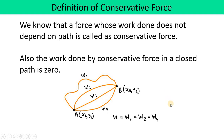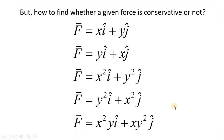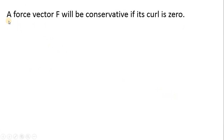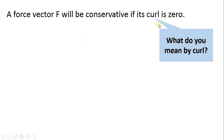But how do we mathematically check whether a given force is conservative or not? Suppose a force vector is given as a mathematical function — by looking at it, it is really hard to decide whether it is conservative. So we use this mathematical method: a force vector F will be conservative if its curl is zero, meaning del cross F equals zero.